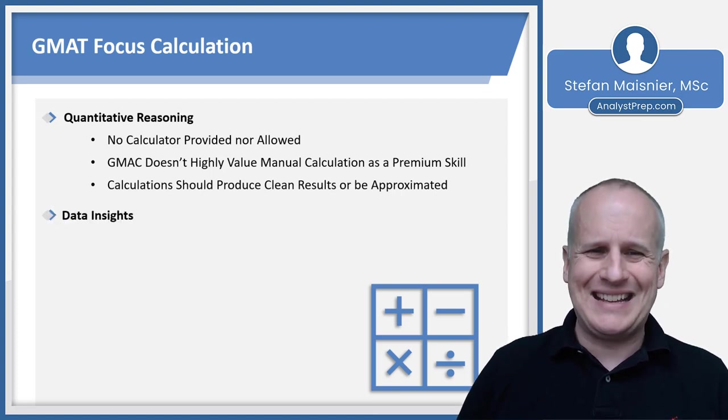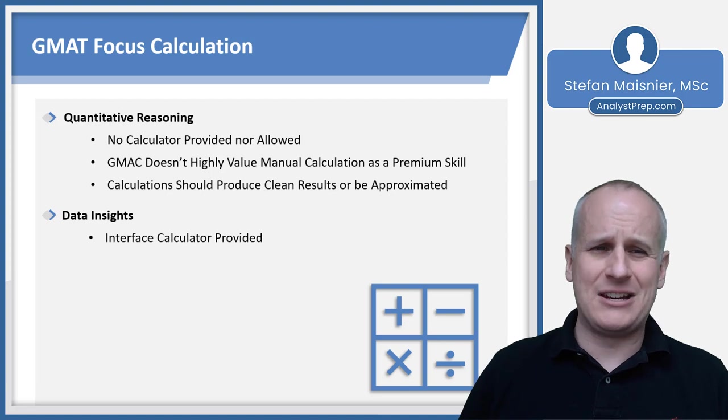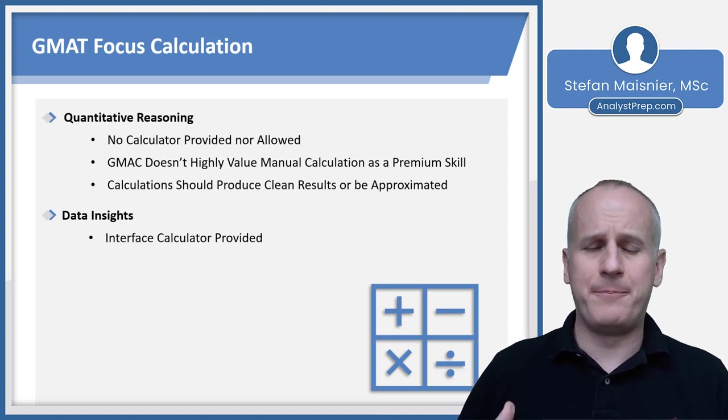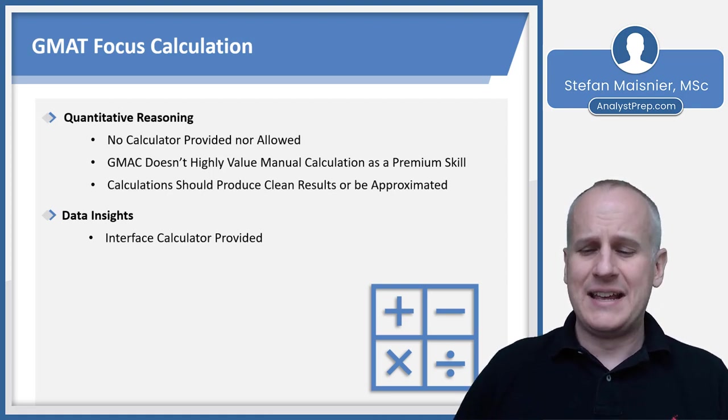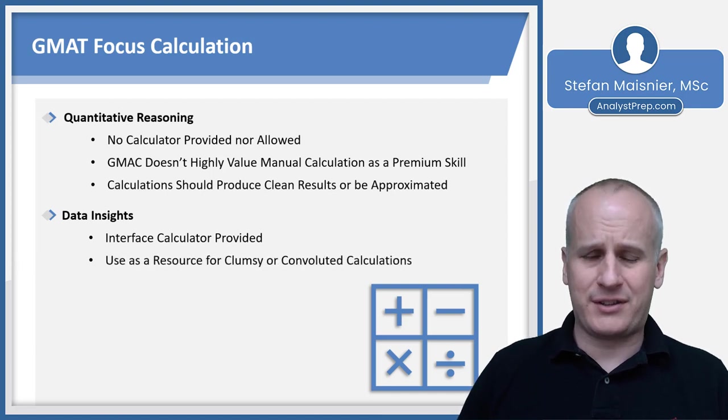Now, in the new data insight section, there is a difference. They will provide an interface calculator. This is the same as when they used to have the integrated reasoning section on the legacy GMAT. The biggest tip for the data insight section is they do expect you to use this calculator. So definitely use it as a resource for clumsy or convoluted calculations so that you're not wasting time trying to manually calculate when it's unnecessary to do so.